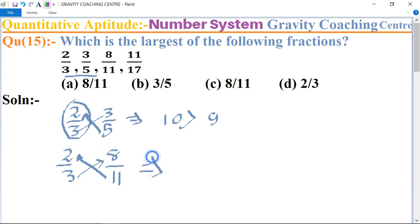This implies that 11 times 2 is 22 and 8 times 3 is 24. So here 24 is greater than 22, so 8 upon 11 is the greater.